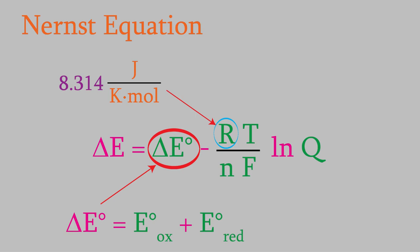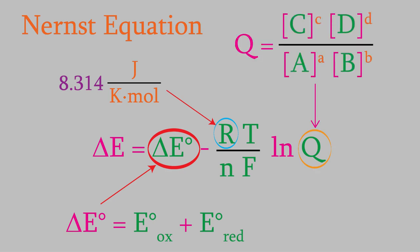You might recall from several earlier videos that Q is called the reaction quotient, and it's the ratio of the concentrations of the products over the reactants, each raised to an exponent that's the coefficient for the balanced reaction.